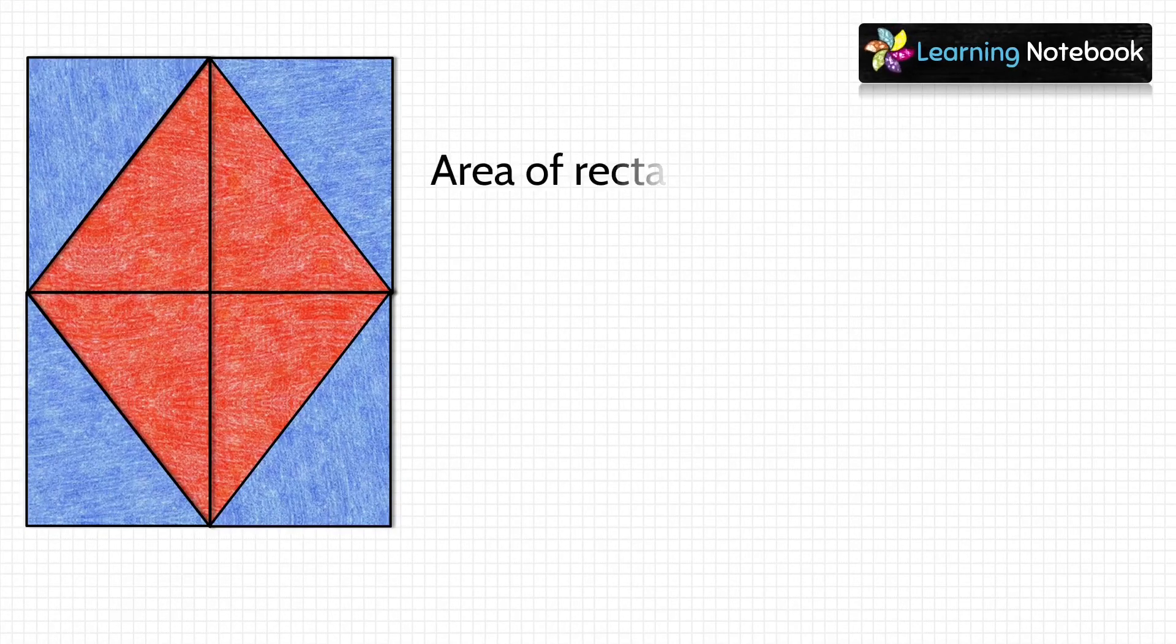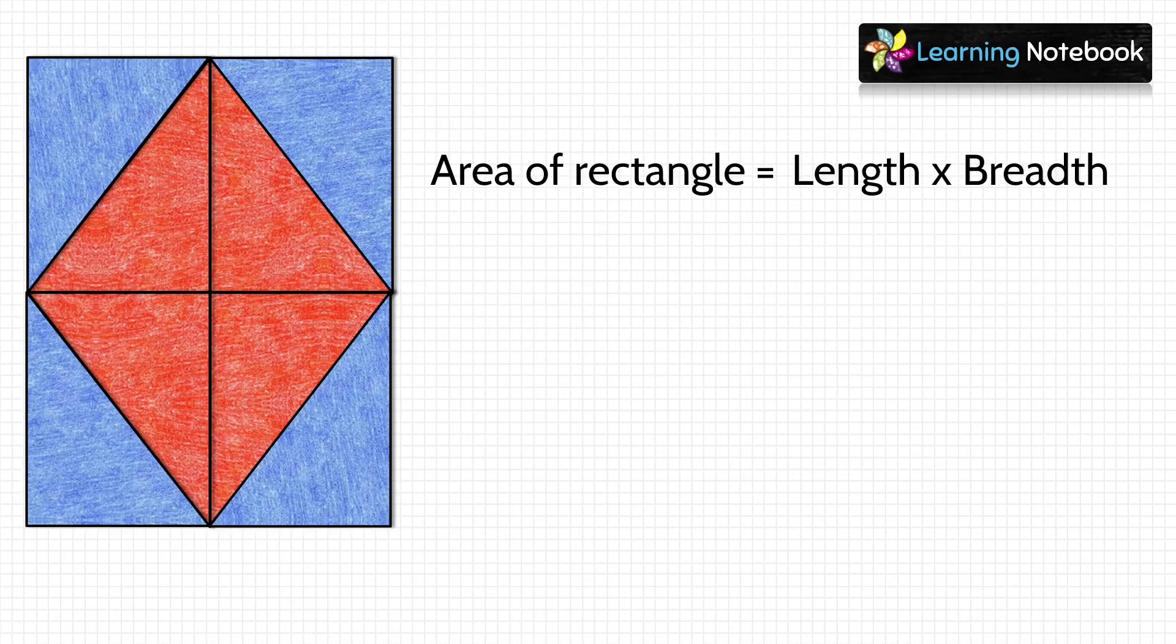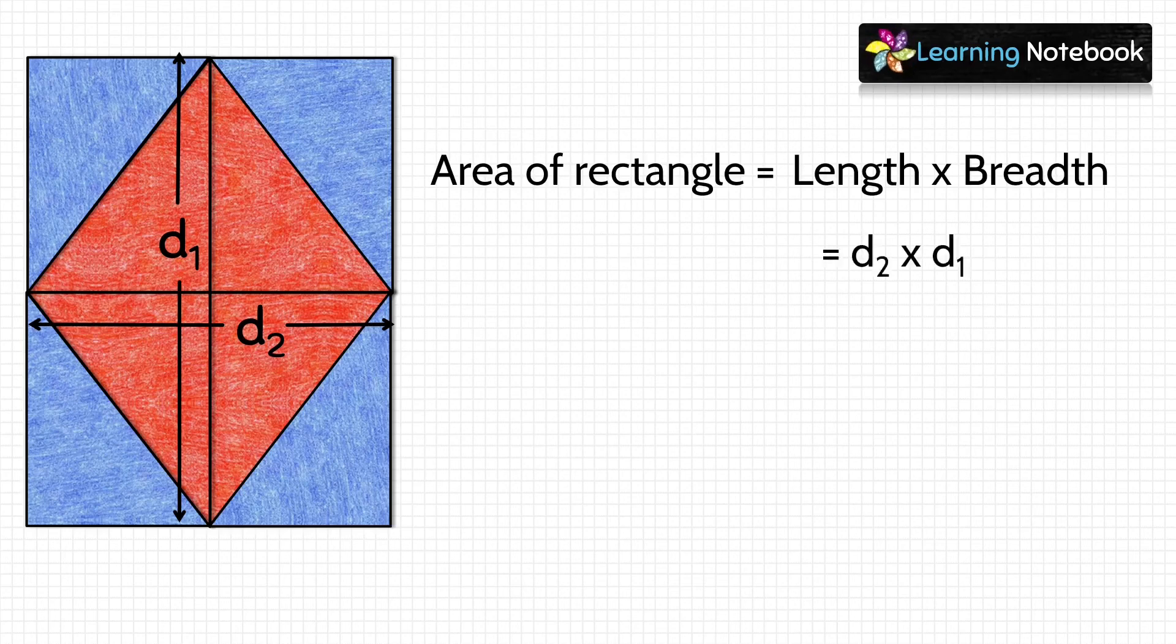Now let's find the area of this rectangle. We know area of a rectangle equals length × breadth. So length of this rectangle is d₂ and its breadth is d₁, so area of rectangle is d₂ × d₁.